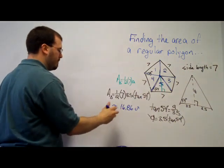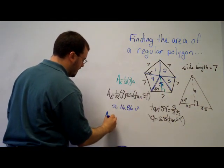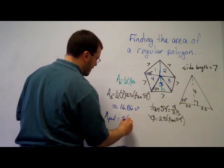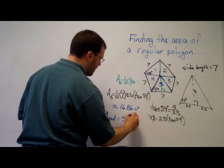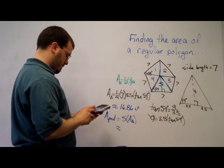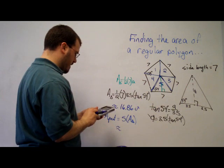But there are five of these isosceles triangles. So the area of the pentagon is equal to 5 times the area of one triangle. So I'll take my answer that's stored, times 5, and I get approximately 84.30 units squared.